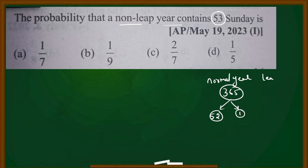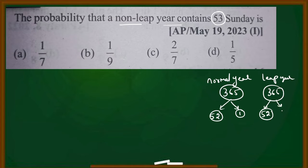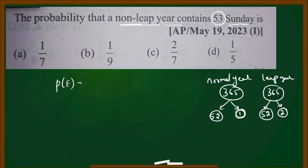For a leap year, there are 366 days — that gives 52 weeks and two extra days, or two odd days. For this question, we choose non-leap year. The extra day could be a Sunday — what is the chance? We use the probability formula: P(E) = n(E) / n(S), which is the number of favorable outcomes divided by total outcomes.